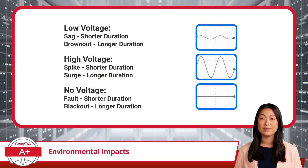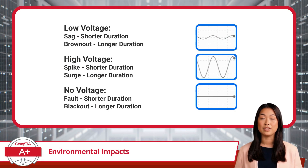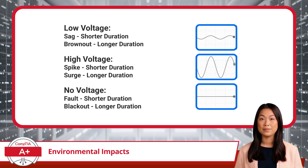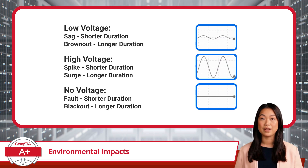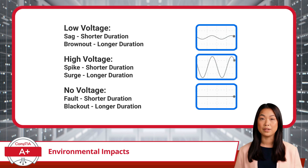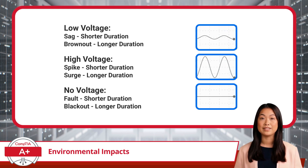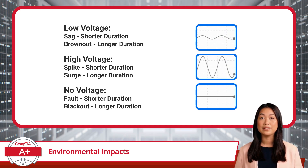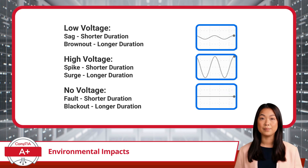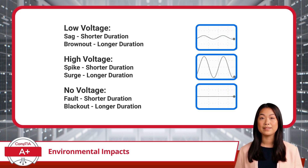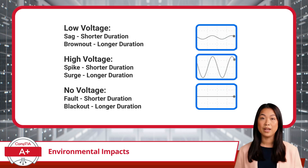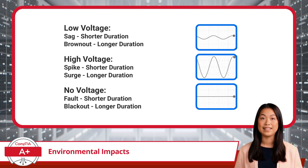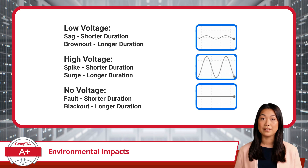Next, let's talk about power problems. We can group power problems into three simple categories: low-voltage, high-voltage, and no-voltage. Low-voltage or under-voltage events, where the power supply dips below normal levels, can cause devices to underperform, shut down unexpectedly, or even suffer long-term damage. These disruptions come in two forms: SAGs, which are brief dips, and brownouts, which last longer. The solution? A battery backup, or uninterruptible power supply (UPS). This handy device steps in to provide stable power during these dips, keeping your equipment running and your data safe.